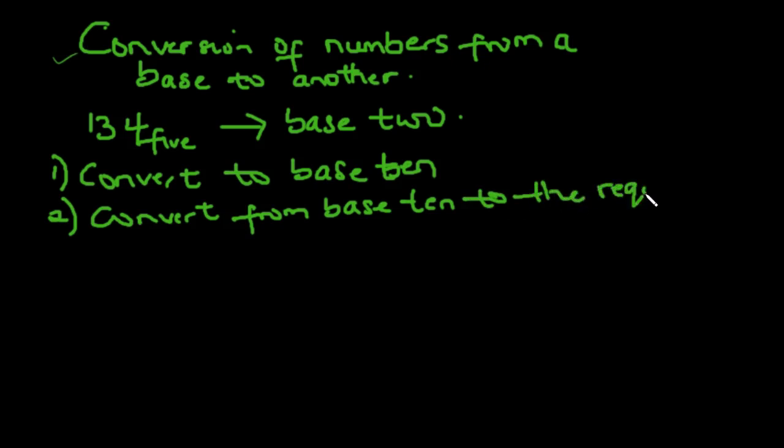I have done videos on how to convert numbers from a given base to base 10, likewise from base 10 to another base. So this video involves the combination of those two steps. So now let's convert 134 base 5 to a number in base 10 first, before we convert the number we get in base 10 to base 2.